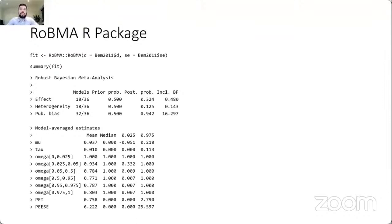In the first summary table, you see information about the whole model ensemble — 36 models specified, 18 assuming presence of the effect, 18 assuming presence of heterogeneity, and 32 assuming presence of publication bias. Prior probabilities are equal across components. You can quantify evidence with Bayes factors and see there is very weak evidence for the absence of the effect, moderate evidence for the absence of heterogeneity, and strong evidence for the presence of publication bias. Then you see the model-averaged estimates for the mean and heterogeneity parameter, the publication bias relative publication probabilities, and PET-PEESE estimates.